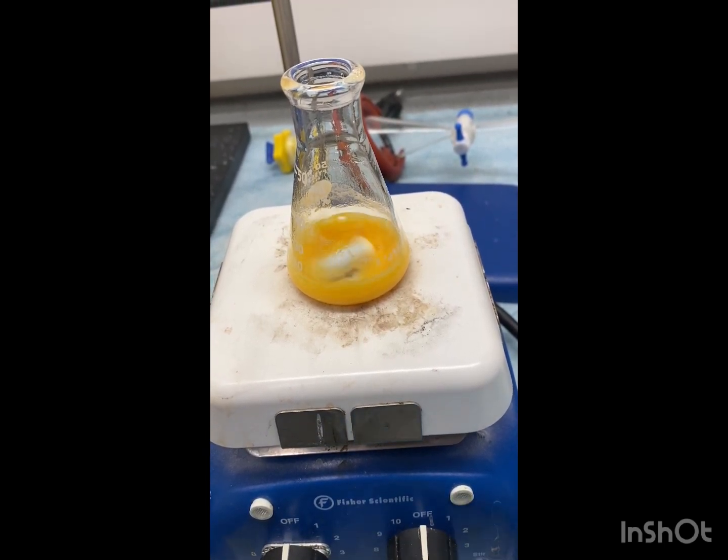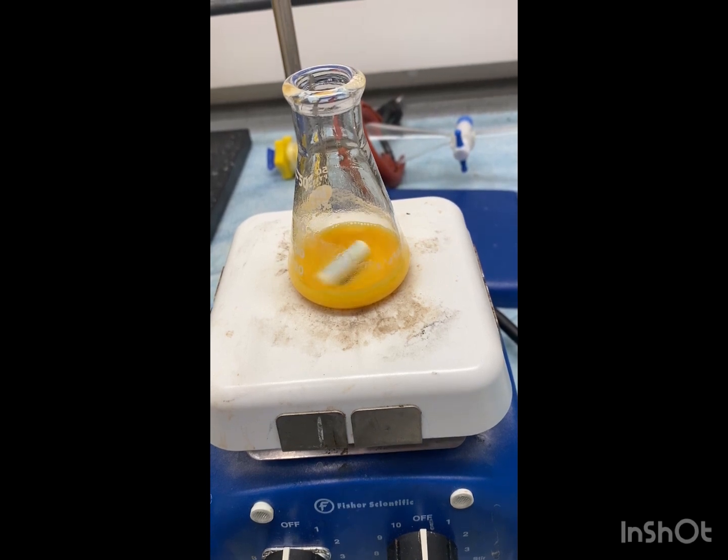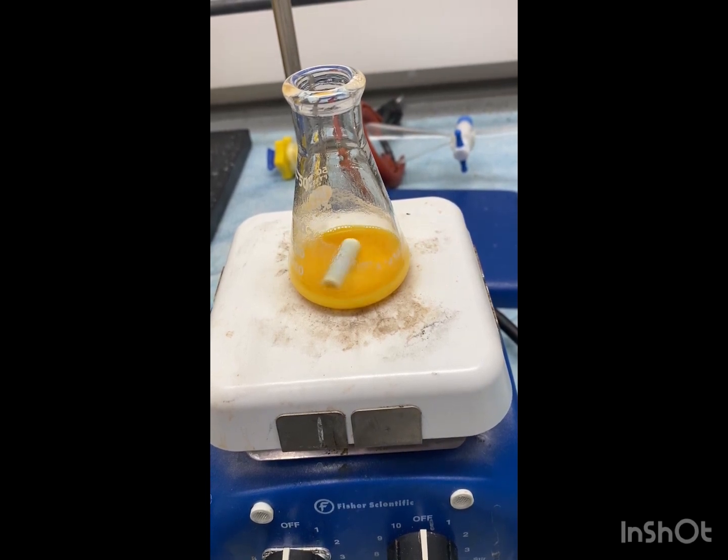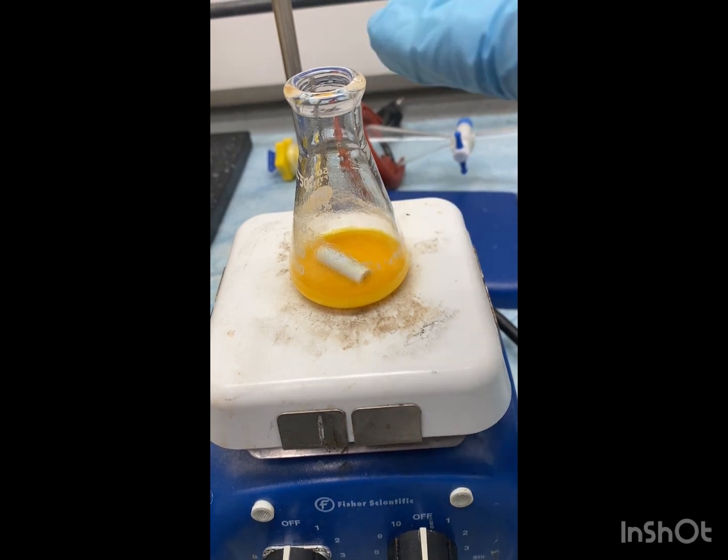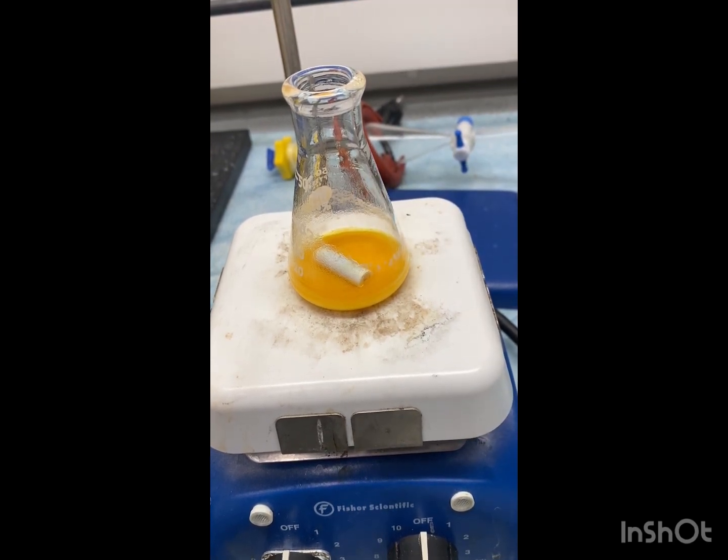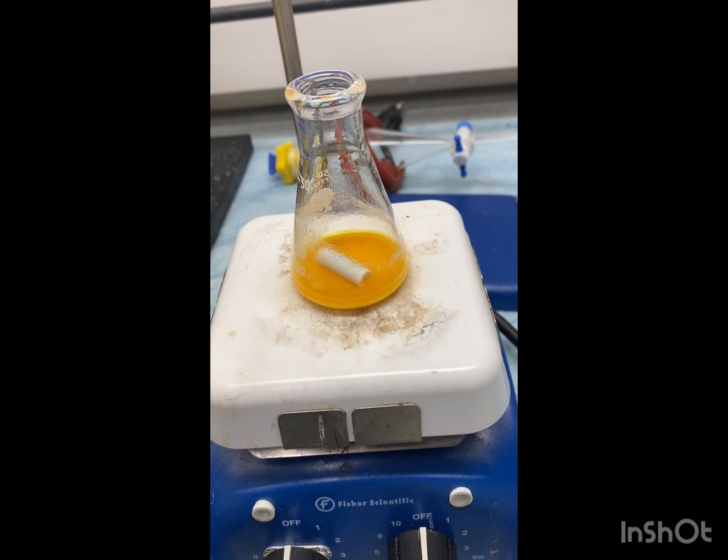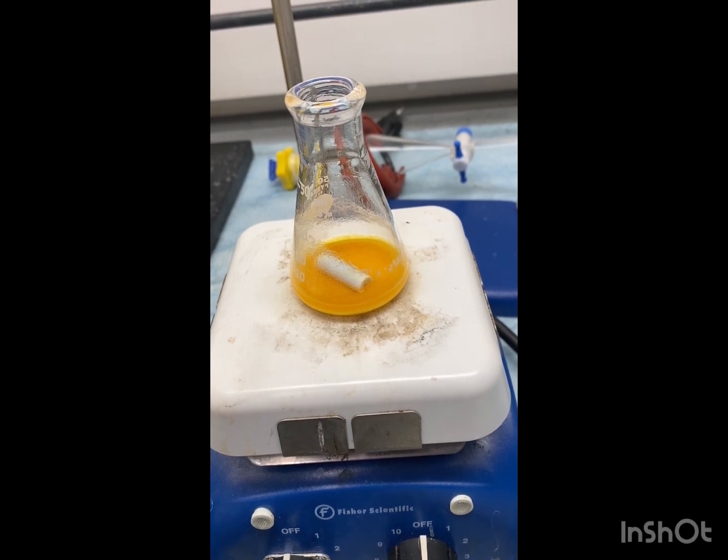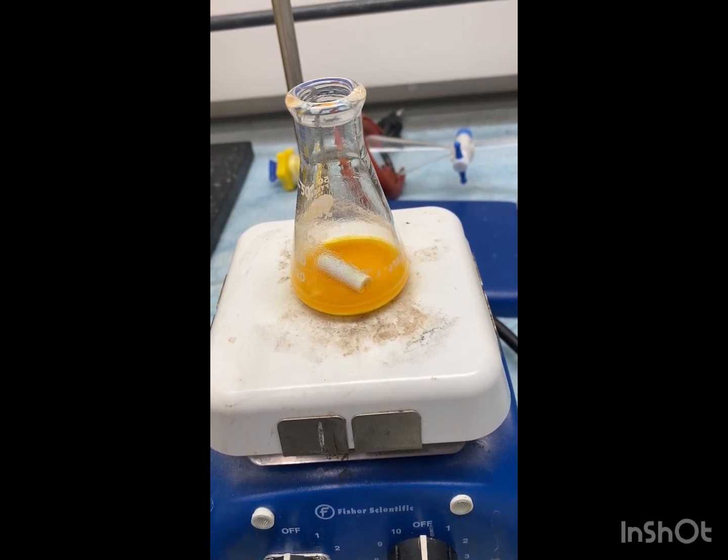Turn our stir off. You want to be careful, you might want to get hot hand gloves cause this could be pretty hot, but we're going to remove it from the heat and just let it cool to room temperature. And once it's cooled to room temperature, we're going to put it in the ice bath for a few minutes.